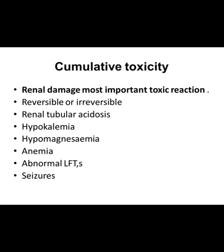The cumulative toxicity: renal damage is the most important toxic effect of amphotericin B and can be reversible or irreversible. This renal toxicity manifests as renal tubular acidosis, decreased serum potassium level, and decreased magnesium level. Amphotericin B also causes anemia due to decreased production of erythropoietin from the kidney, and leads to abnormal liver function tests.